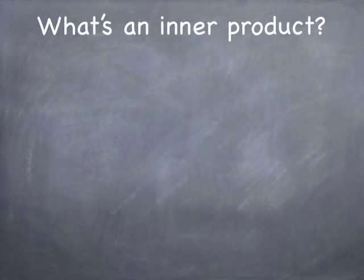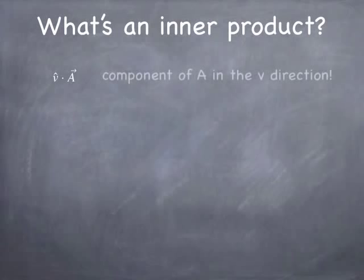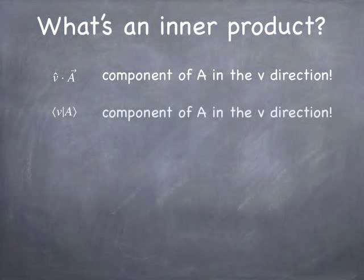Let's review what we mean by an inner product. An inner product in plain old vector notation is a dot product. We've got a unit vector dotted into some arbitrary vector. Conceptually, it's a number that represents the degree to which a points in the v direction — it's a component of a in the v direction. In direct notation, we'd write the same thing, thinking of a as a vector in some abstract vector space and v as a unit vector in that space. The interpretation is exactly the same: it's the component of a in the v direction.